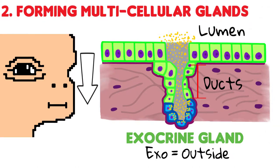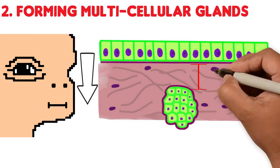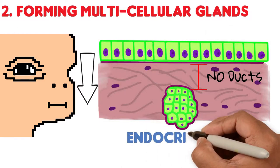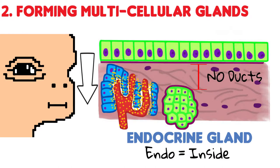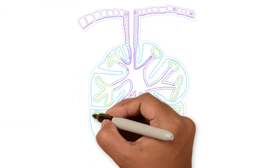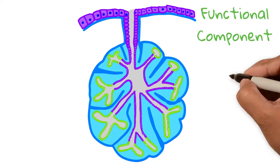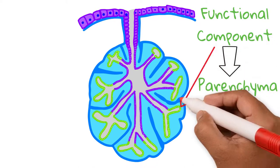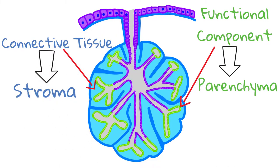Exo means outside — the secretions of exocrine glands are carried outside to the lumen via ducts. If the original connection is lost, the gland doesn't develop ducts and is known as an endocrine gland — endo meaning inside. The secretions of endocrine glands are absorbed by the thin-walled capillaries that surround them. The covering epithelia is responsible for the creation of both exocrine and endocrine glands. The group of epithelial secretory cells in a gland — the functional component — is called the parenchyma, while the surrounding connective tissue support is called the stroma.